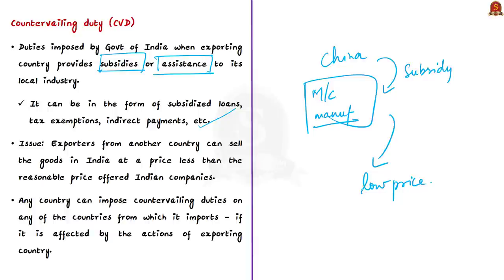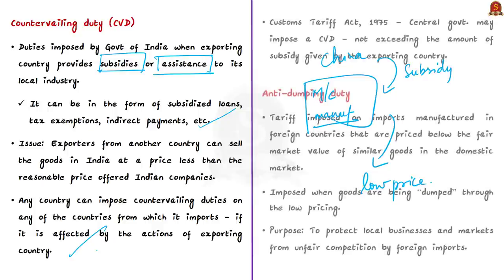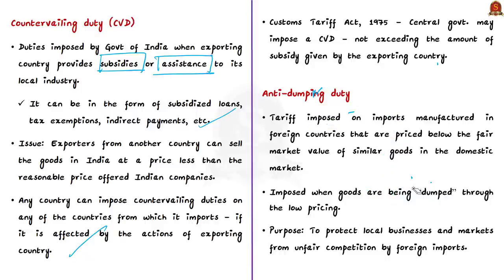Any country can impose countervailing duties on countries from which it imports if it feels affected by the exporting country's subsidy actions — similar to how the US is now planning to impose countervailing duties on many countries including India. In India, under the Customs Tariff Act of 1975, the central government may impose a countervailing duty and it should not exceed the amount of subsidy given by the exporting country.